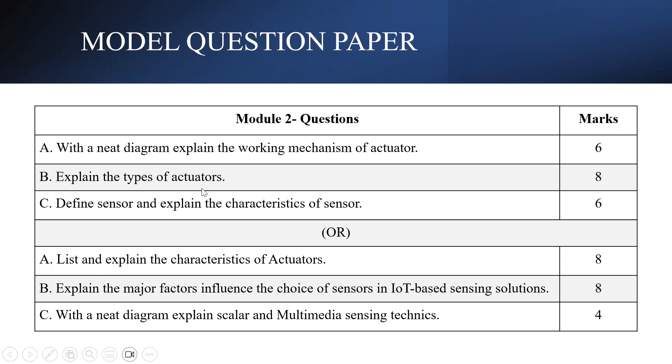Explain the types of architecture. All the types of architecture should be explained in detail, where the weightage is 8 marks.